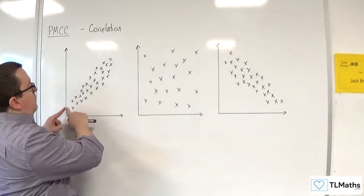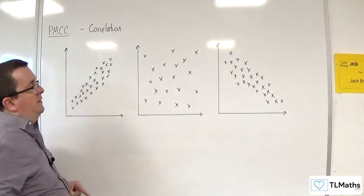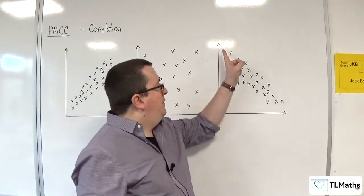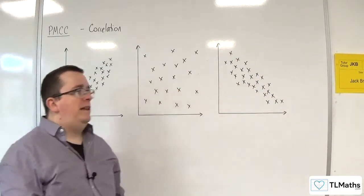And so you can have perfect positive correlation if they're all in a neat straight line, and perfect negative correlation if they're all in a neat straight line.